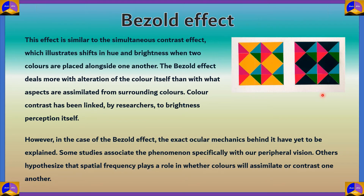Color contrast has been linked by researchers to brightness perception itself. Changing color, as in the example shown here, can also affect the perceived brightness of an object — an orange background makes it look less bright than a black background. All of this is happening inside our head; it's what your brain is interpreting from the image.